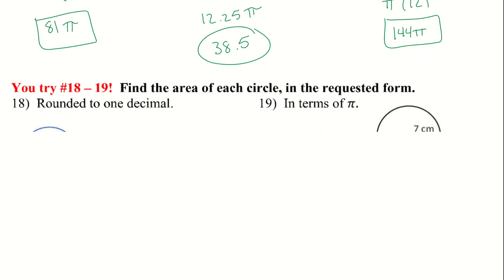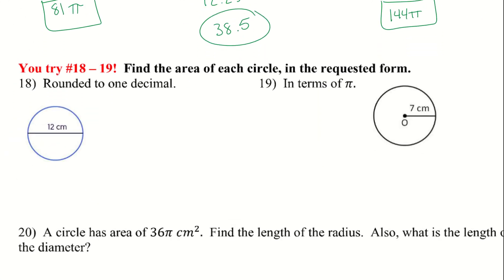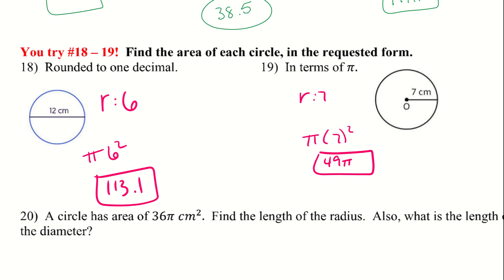Go ahead and try problems 18 and 19. Number 18 is rounded to one decimal, and number 19 is in terms of pi. Pause the video and give those a shot. Here are 18 and 19 — 18 is a decimal answer and 19 is left in terms of pi.